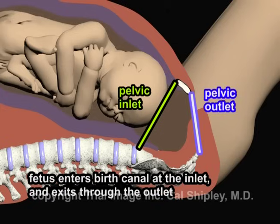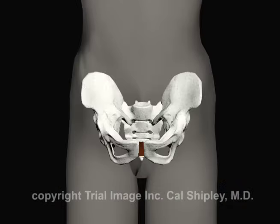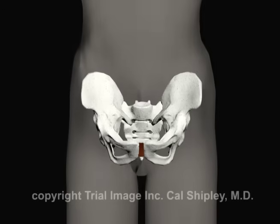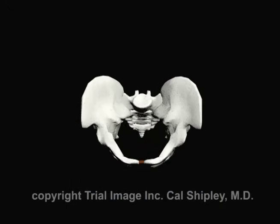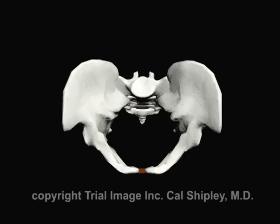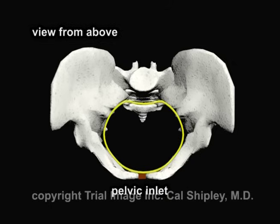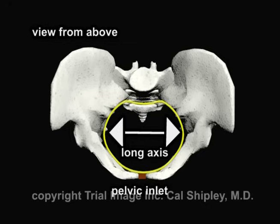The fetus enters the birth canal at the pelvic inlet and exits through the pelvic outlet. In relation to how the cardinal movements facilitate passage of the fetus through the birth canal, it is important to note one key anatomical difference between the pelvic inlet and the pelvic outlet. Viewing the pelvis from above, the yellow line highlights the outer border of the pelvic inlet. The long axis of the pelvic inlet goes from left to right — in other words, the pelvic inlet is wider than it is deep.